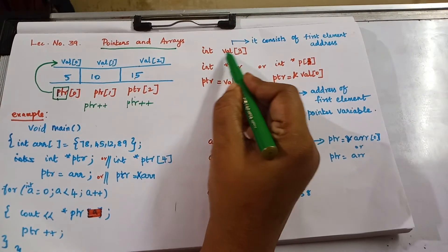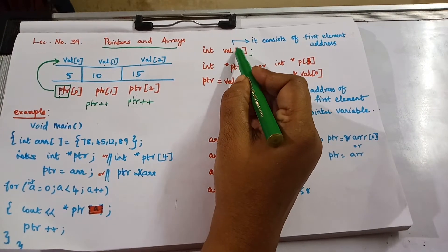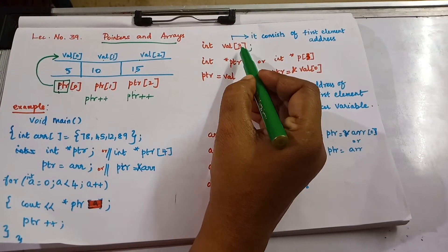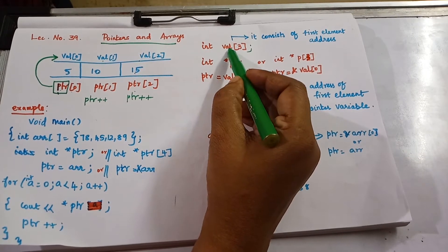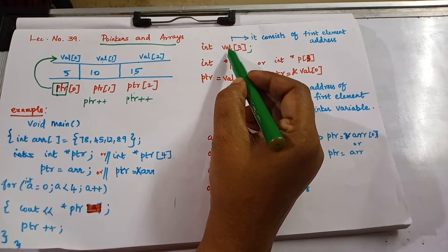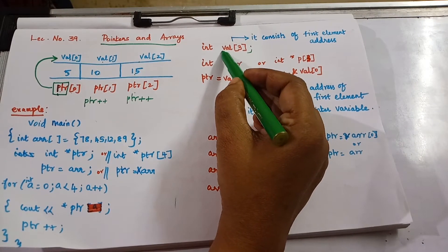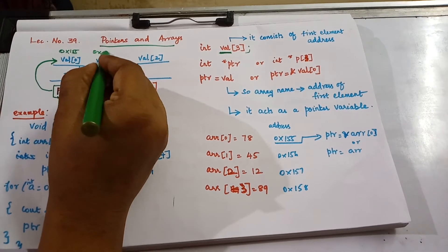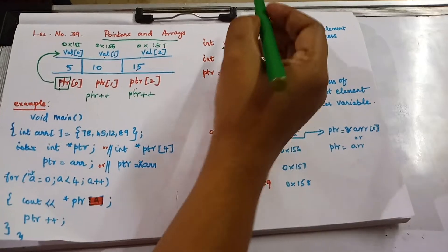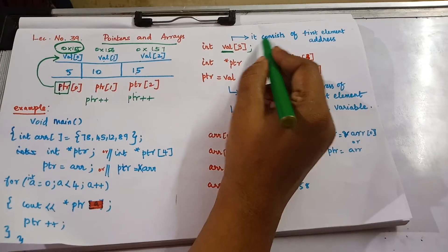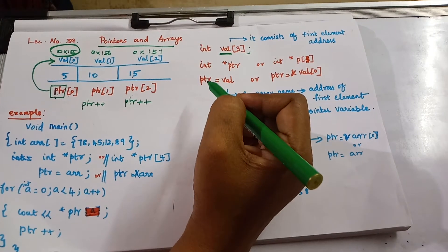Consider the statement: 'int val[3]'. Here 'val' is the array name and the size of the array is 3, starting from indices 0, 1, and 2. The variable 'val' holds the first address — for example, 0x155, 0x156, 0x157. So 'val' consists of the address of the first element in that array. Whenever you use a pointer, you need the address — this is very important.